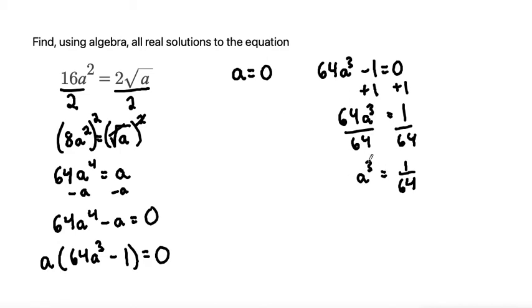From here, we can get rid of the cube by taking the cube root of both sides. This cube root cancels out with the cube and that leaves us with a. Since it's an odd cube root, we don't have to do the plus or minus. The cube root of 1 is 1 divided by the cube root of 64 is 4.